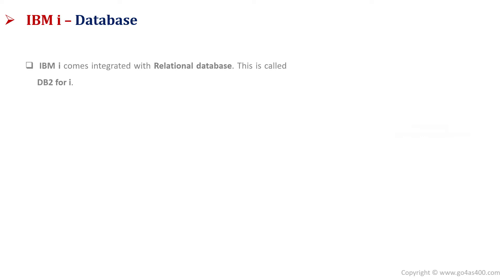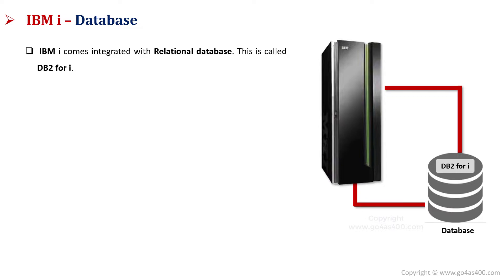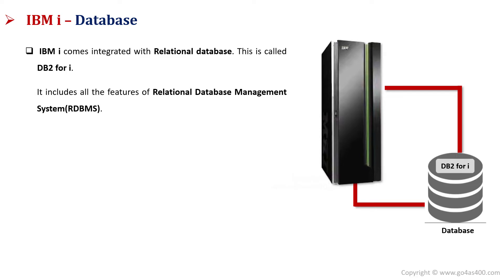Now let's see the database which comes integrated with IBM i. When we install IBM i, it comes integrated with a relational database. This relational database is known as DB2 for i. It includes all the features of an RDBMS system.